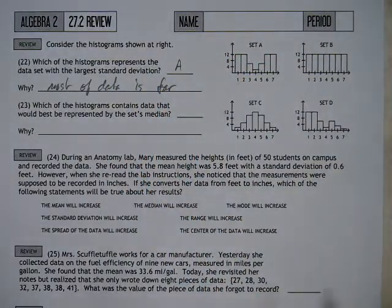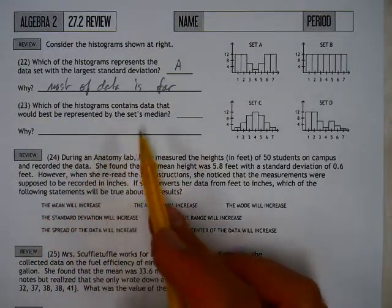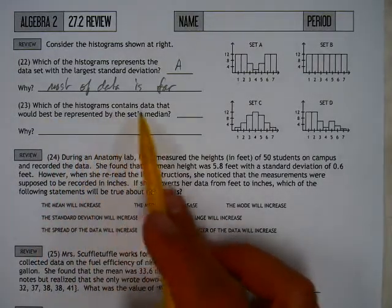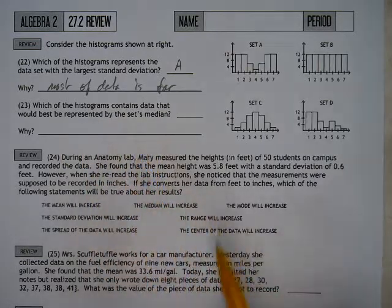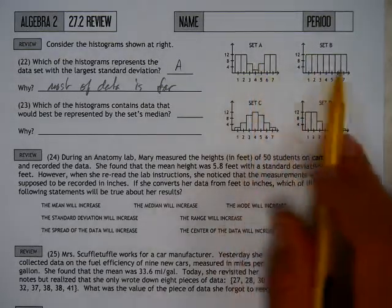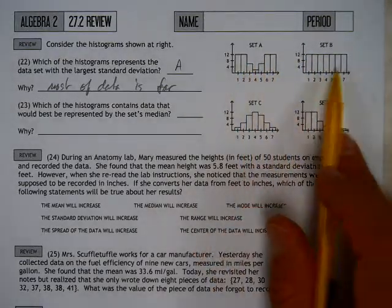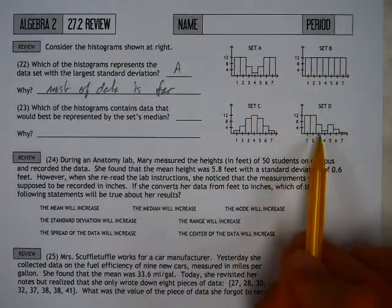That's the abbreviated version. When we talk about which of the histograms contains data that would best be represented by the set's median—okay, well the mean and the median are the same for all three of these, so they're kind of interchangeable because all these are symmetric. This is the one that's skewed